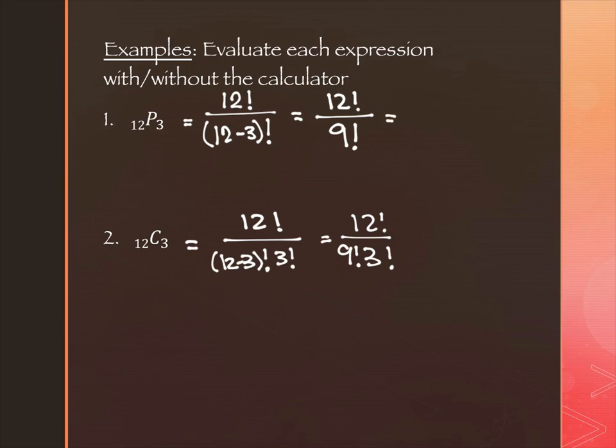So we're going to do this real quick. This is 12, 11, 10, and 9 factorial to cancel with my 9 factorial. If you were to put this in your calculator, I promise you, you're going to get 1,320.